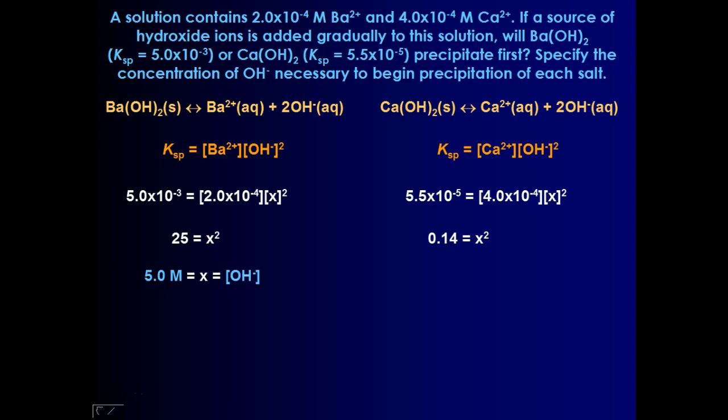I would solve for X squared the same way I did before, but I see this time because 4 times 10 to the negative 4th was larger than 5.5 times 10 to the negative 5th, that X squared is a lot smaller, and then the concentration of hydroxide in that mixture is even less, 0.37 molar. So I would need much less of the hydroxide ion for precipitation to occur with calcium hydroxide than I would have with barium hydroxide.